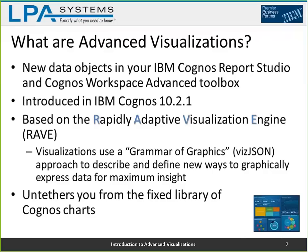It's based on something called the Grammar of Graphics, which ultimately becomes a programming language called VizJSON. Some programmers in the audience may know JSON — VizJSON is a variant specifically used to express an advanced visualization. This untethers you from the fixed library of Cognos charts: first, it's a collection of new visualizations that go beyond what the chart library does.